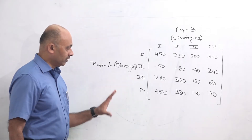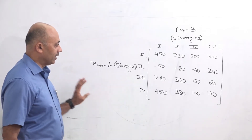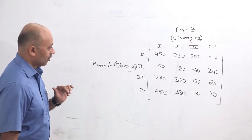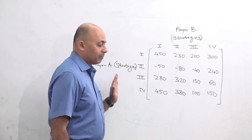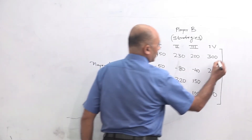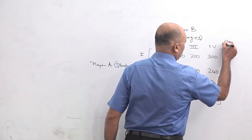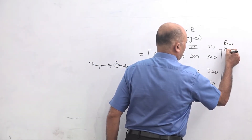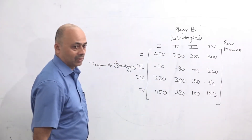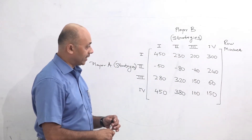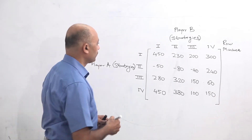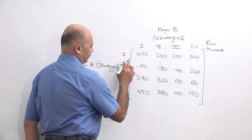Now when we want to solve this problem, the first thing we have to find is the values of Maximin and Minimax. Maximin means maximum out of minimum values. So first we will find the minimum values for each row, and that is what we call row minima. Row minima means finding the minimum value of each row.